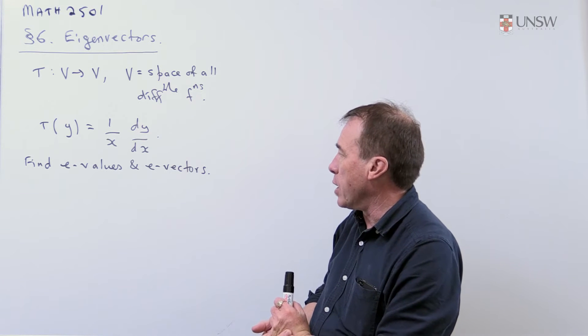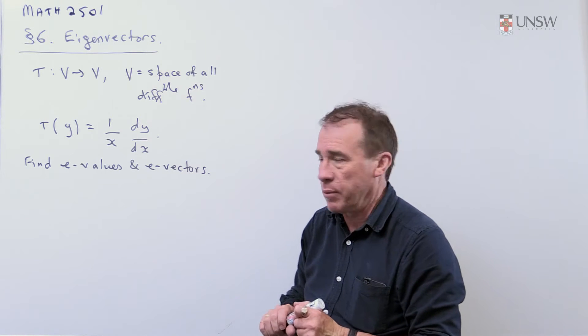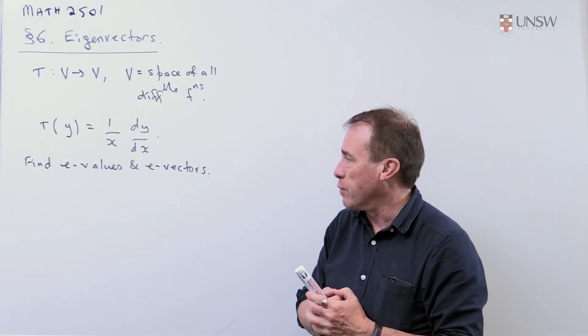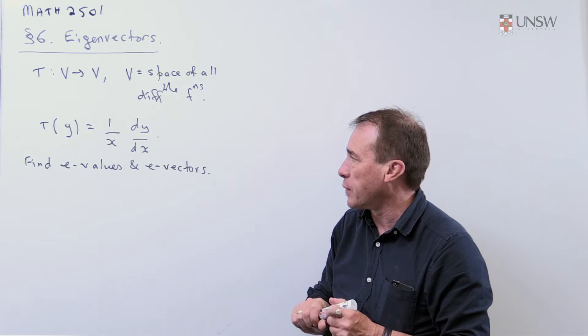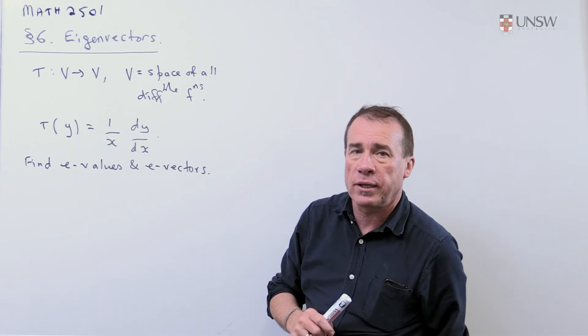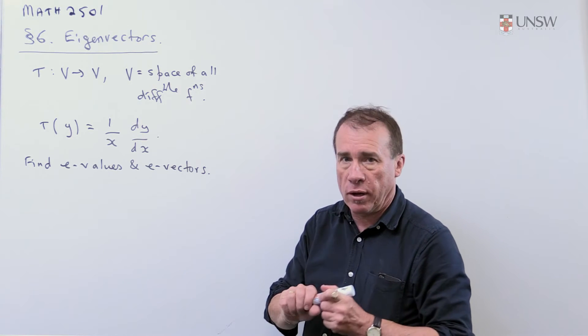I want to find the eigenvalues and eigenvectors, whatever that quite means in this particular context for this particular linear map. So remember, there's no matrices here. You have to go back to the definition of what you mean by an eigenvector.